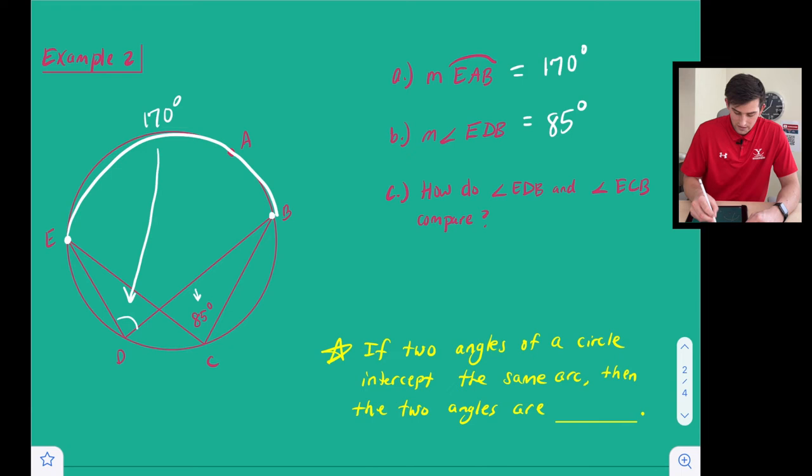So now this last question asks us how do angles EDB and ECB compare? Well as we can see they're both 85 degrees right. So they have the same measure. They're both 85 degrees.